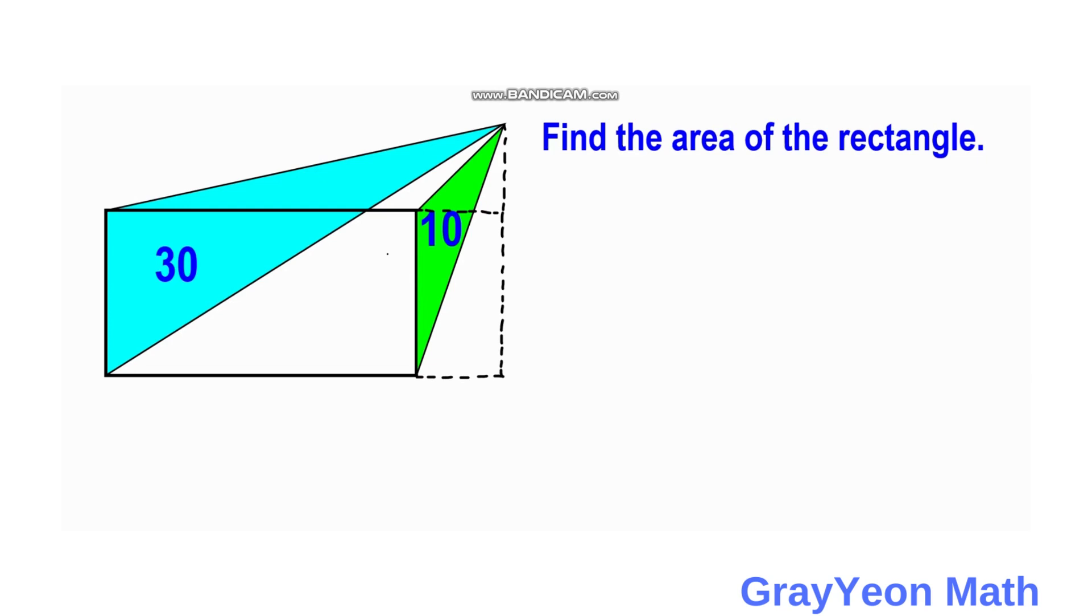then we can actually shear the green triangle to have this position or orientation, while the blue triangle will have this configuration.